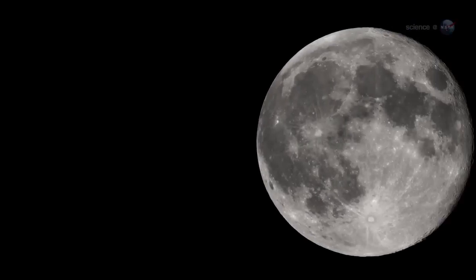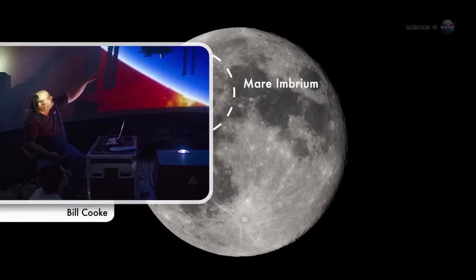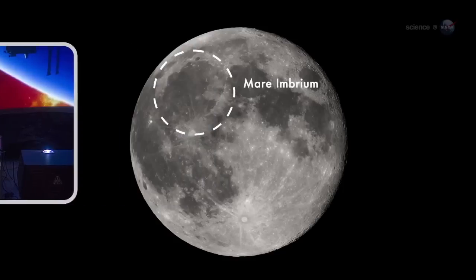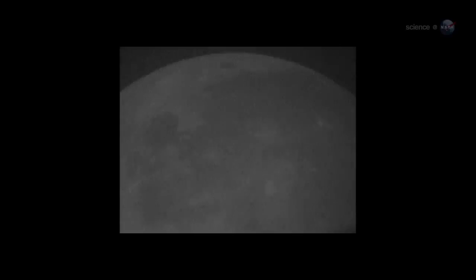On March 17, 2013, an object about the size of a small boulder hit the lunar surface in Mare Imbrium, says Bill Cook of NASA's Meteoroid Environment Office. It exploded in a flash nearly ten times as bright as anything we've ever seen before. Anyone looking at the Moon at the moment of impact could have seen the explosion, no telescope required. For about one second, the impact site was glowing like a fourth-magnitude star.